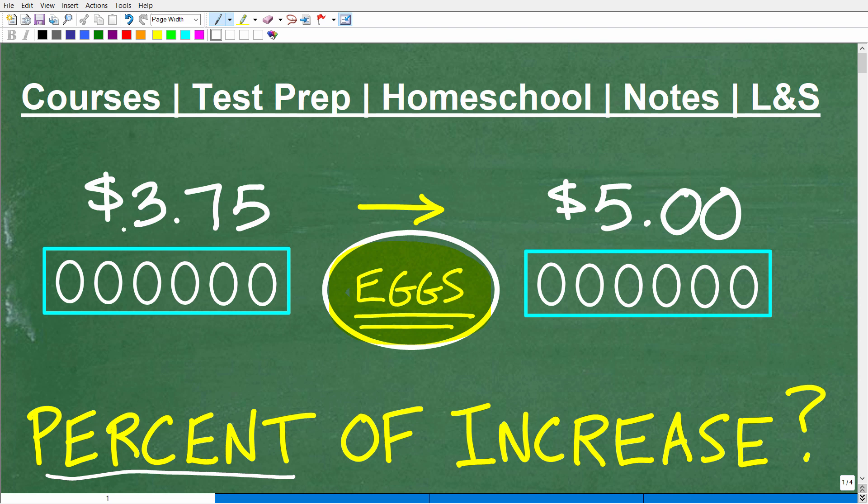So here we have a dozen eggs, and they used to cost, let's say, $3.75, and even then, at least based upon the time of this video, that was pretty expensive, so it all depends on what state you're buying eggs in.